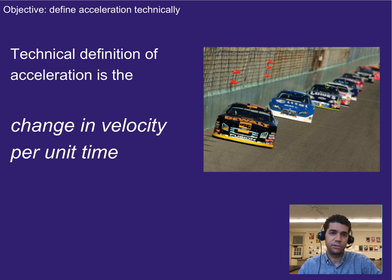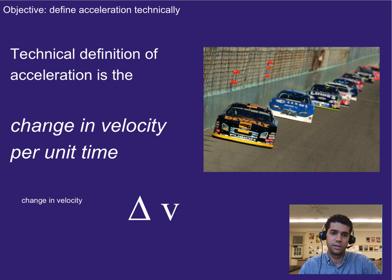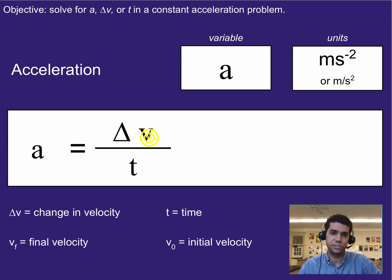Your technical definition for acceleration is going to be change in velocity per unit time. So if we wanted to pull out an equation from that definition, we can see that change in velocity we'd represent as delta v. Per always just means a division or fraction symbol, and then time would just be down below. So that gives us the equation of acceleration equals change in velocity divided by time, where this triangle just means change, and it's referring to change in velocity.